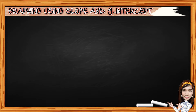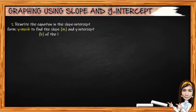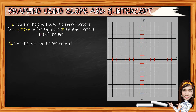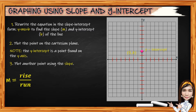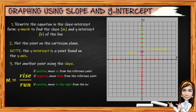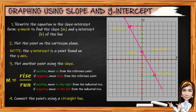Moving on — graphing using slope and y-intercept. For number 1, rewrite the equation in slope-intercept form y equals mx plus b to find the slope m and y-intercept b. For number 2, plot the y-intercept point along the y-axis with coordinates 0 comma b. For number 3, plot another point using the slope: m equals rise over run. If the rise is positive, move up; if negative, move down. If the run is positive, move right; if negative, move left. Then plot the second point. And for the last, connect the points using a straight line.